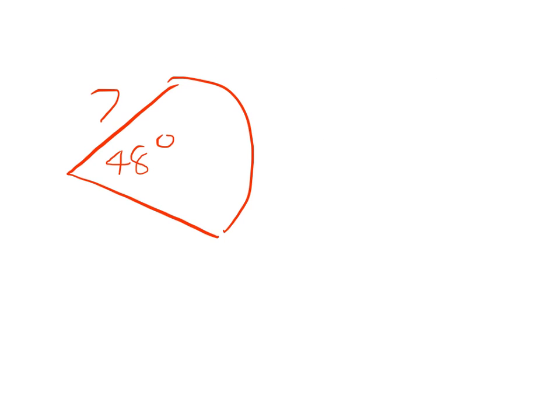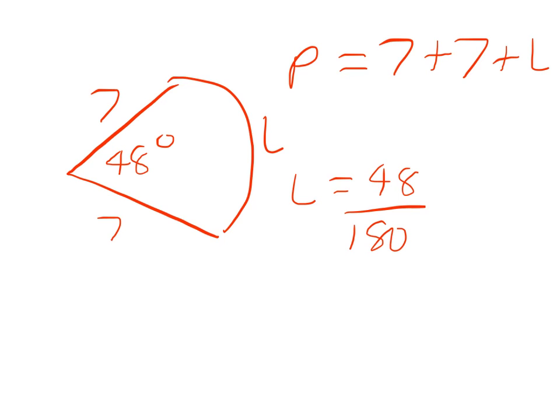So we'll work out the full perimeter of this sector. The perimeter will equal 7 + 7 + L. L will equal 48/180 × π × 7. You'll know that from the previous bit of this video.